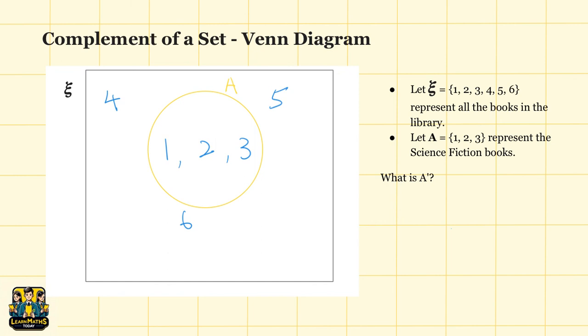Now, recall the definition of complement. The complement of a set A refers to all the elements in the universal set that are not in A. In other words, everything that is not inside the circle A. So you could see that elements 4, 5, and 6 are outside of the circle A and are still inside the universal set. So the complement of set A is a set containing 4, 5, and 6.